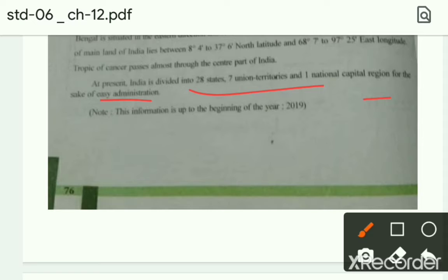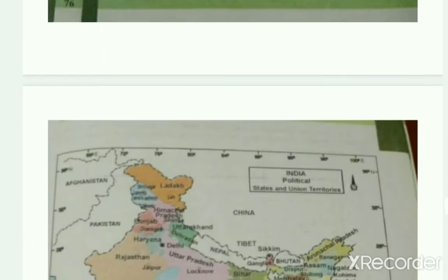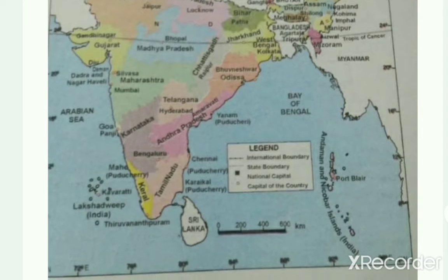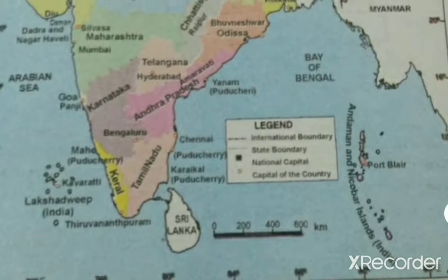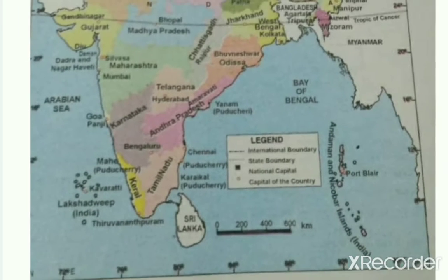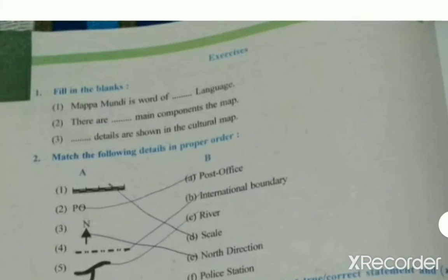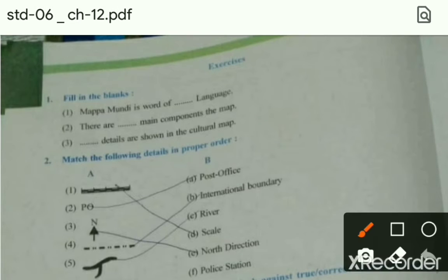2019 के basis पे यह information दी गई है। यहाँ पे students जो हमारा map है — political map India का दिया गया है। इसमें states and union territories, international boundary, state boundary, national capital और capital of country दिखाई गई है। आज जो हमारा chapter है वो completely finished हो गया है। तो आज उसके साथ मैं आपको exercise भी कराऊंगी — let's start our exercise। Fill in the blanks।